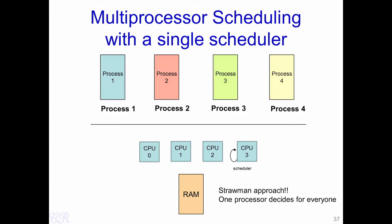One very simple scheme for a multiprocessor scheduler is where there is a dedicated CPU to run the scheduler. This scheduler decides for everyone — essentially it decides which process should run in which CPU. Implementing this scheme is very simple: the scheduler has a local queue of ready processes and uses some mechanism to decide which process goes to which CPU. The limitation is performance degradation, since all CPUs are waiting for the scheduling CPU to tell them which process to execute next, which could happen every 10 milliseconds, leading to significant scheduling overheads.